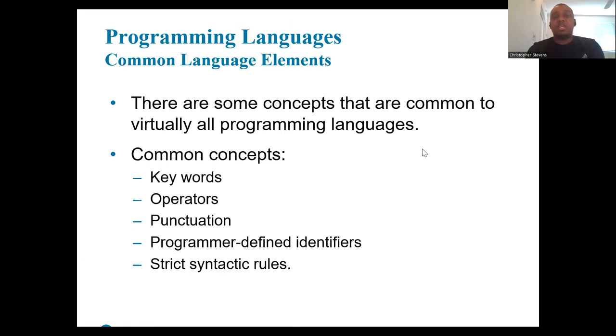Programming languages have keywords, which are reserved words that have special meanings; operators, which are symbols that perform operations on variables and values; punctuation, which are characters that separate statements and other elements; programmer-defined identifiers, which are names given to variables, functions, etc.; and strict syntactic rules, which is the grammatical structure of the programming language.